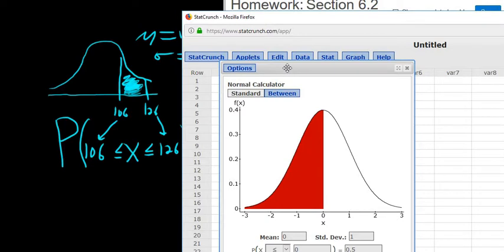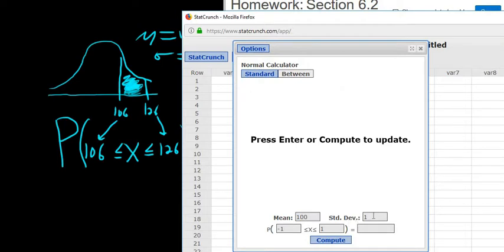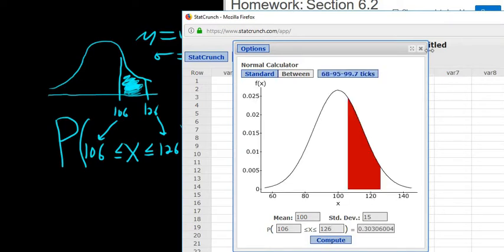This is the between probability, so we click the between button. The mean was 100, the standard deviation was 15. The 106 goes in the box on the left and the 126 goes in the box on the right. Click Compute. There's the answer.